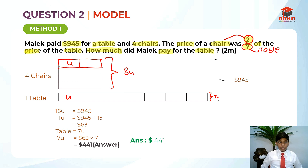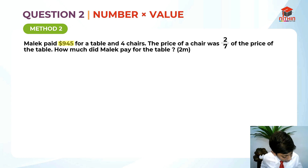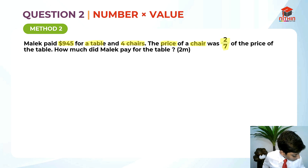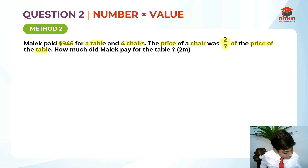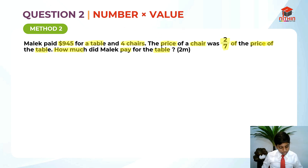Let's move on to Method 2. Let's highlight the information again so that it will be easier to cross-reference. How much did Malik pay for the table? So this is the key information. We can move on to solving this question with the method of number times value. I think this method is a bit different — you would not have heard of this method. So I'll teach you along the way.